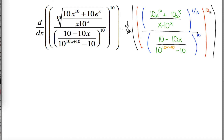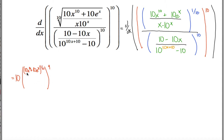It's a bunch of stuff raised up to the 10th power. If it were just x raised up to the 10th power, I could figure out the derivative — I would say it's 10x to the 9th. It's not x raised up to the 10th power; it's all this raised up to the 10th power. So my derivative is all that stuff raised up to the 9th: 10x to the 10th plus 10e to the x, that whole thing raised up to the 1/10th power, divided by x times 10 to the x, and that whole thing divided by another quotient — a bunch of stuff raised up to the 10th power: 10 minus 10x over 10 raised up to the 10x plus 10 power minus 10. This in red is just peeling off the red layer.